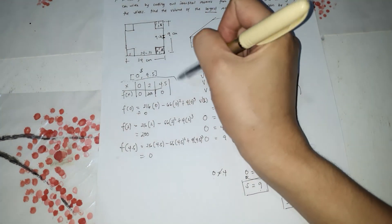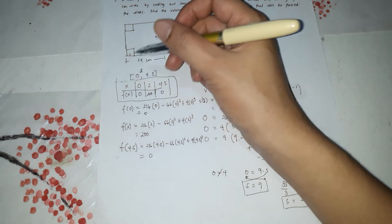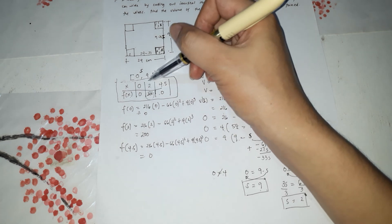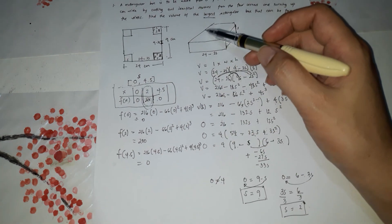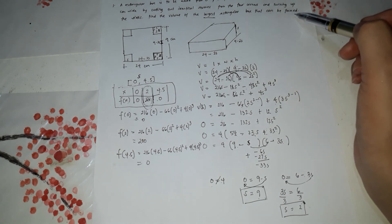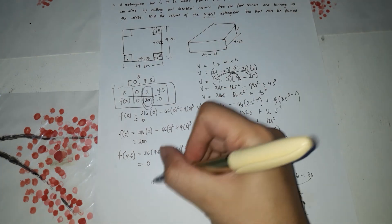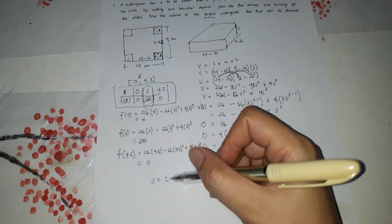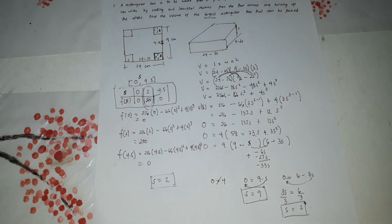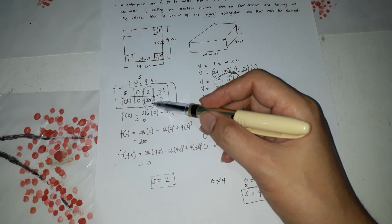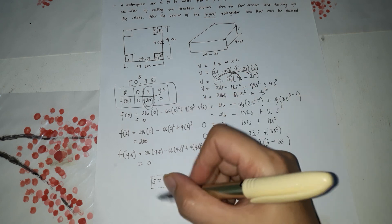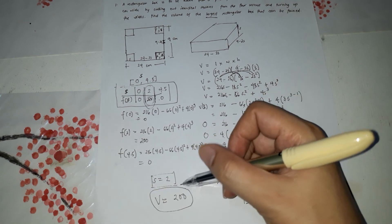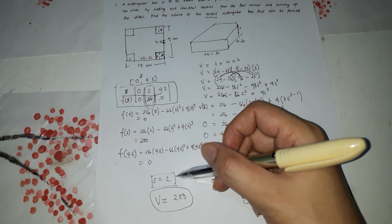So based on our table, where is the highest, the highest f of x? So the highest f of x is 200. So therefore, the maximum, the volume of the largest rectangular box can be formed by the dimension S. Sorry, this should be S. S is equal to 2. So S is equal to 2 to get the largest volume. So what is the largest volume when S is equal to 2? That's the 200. So the maximum volume is 200, which the dimension for S is equal to 2.